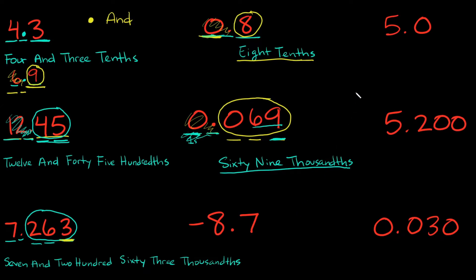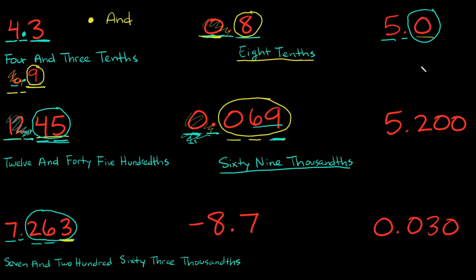Next example: 5.0. How would we read this? We have five and... what number do I have after the decimal? Just a zero. What place value does it end in? The tenths place. So this would be 'zero tenths.' You could read it as 'five and zero tenths,' but zero tenths is still just zero — it doesn't contribute anything to my number. So here we really just have the number five.